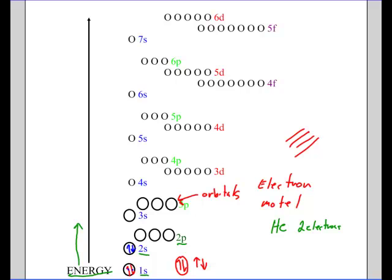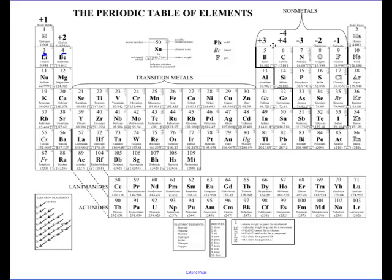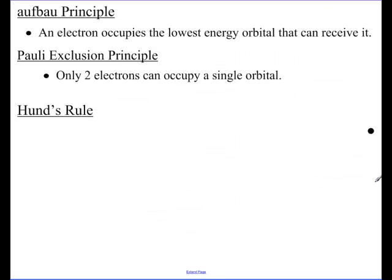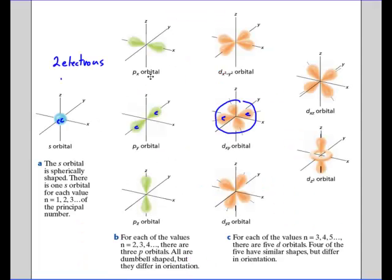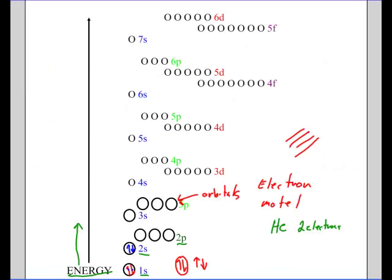Let's go to the next element: boron, element number five, with five electrons. Where does that fifth electron go? It has to go to the lowest energy orbital that can receive it. After the 2s orbital comes the 2p orbital. Looking at the diagram, there are three circles representing the 2p orbitals — because there's a p orbital on the x-axis, one on the y-axis, and one on the z-axis. So that fifth electron goes into the first 2p orbital.